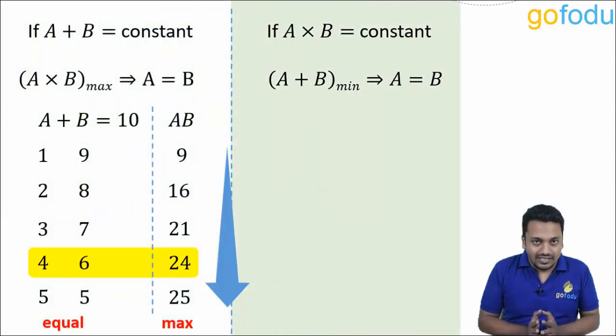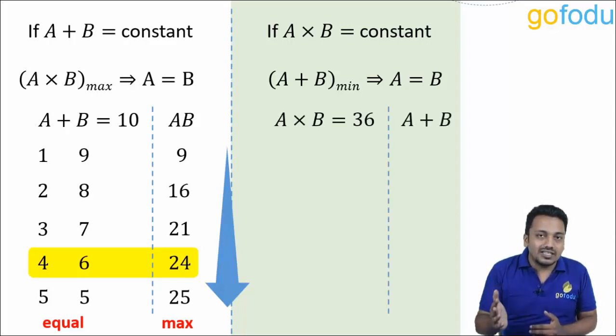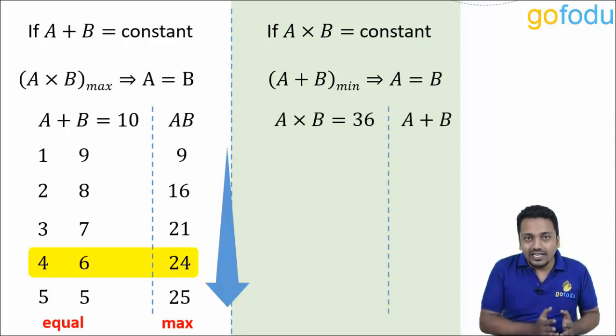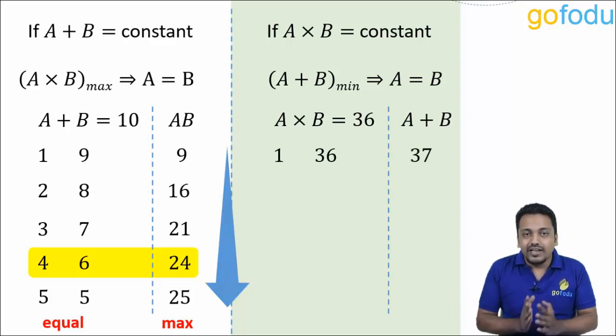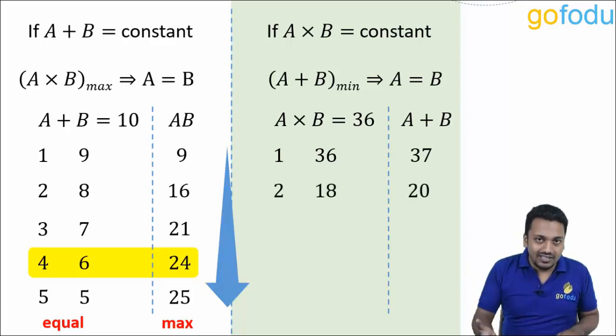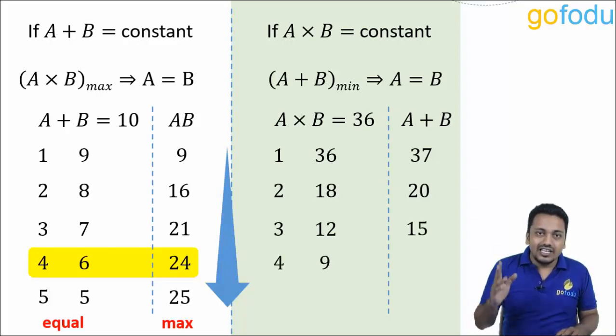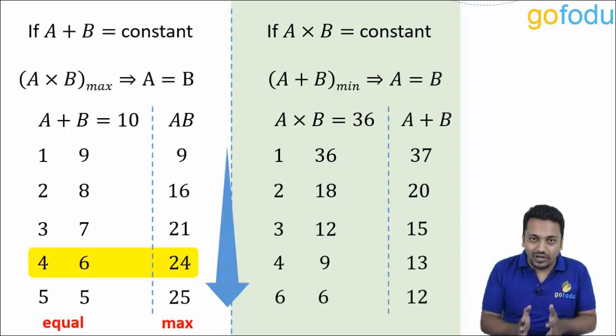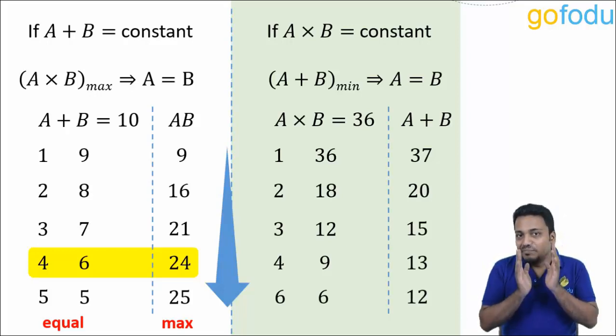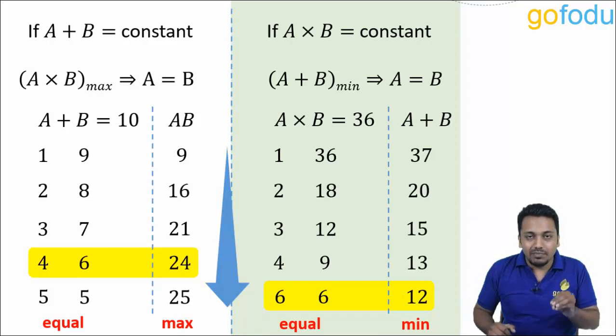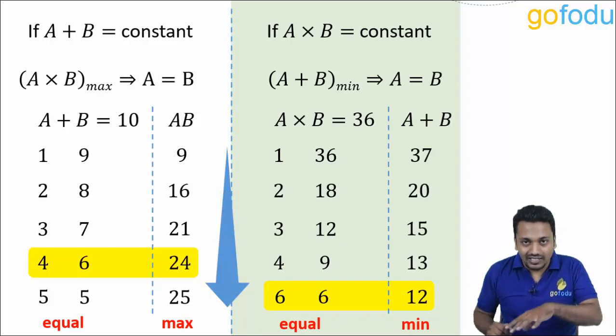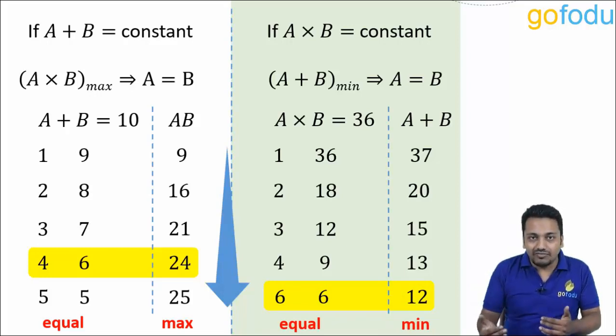When the product is constant, let's say A into B is 36. If A is 1, B will be 36, sum A plus B will be 37. A is 2, B is 18, A plus B is 20. A is 3, B is 12, A plus B is 15. A is 4, B is 9, A plus B is 13. A is 6, B is 6, A plus B is 12. Now you can see the minimum value of A plus B occurs when A and B are equal to 6.